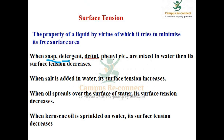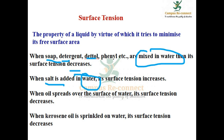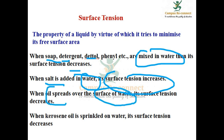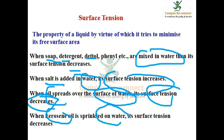For example, adding soap or detergent to water decreases the surface tension. Salt and water mix increases the surface tension. Oil sprayed over the surface of water decreases the surface tension. Kerosene sprinkled on water also decreases the surface tension.